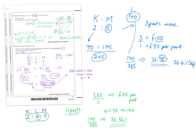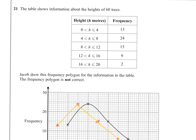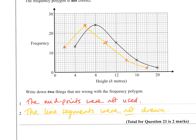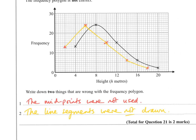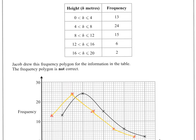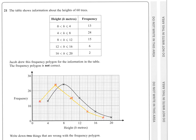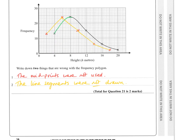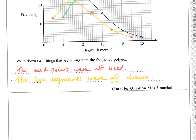Question 21. The table shows information about the heights of 60 trees, and Jacob drew a frequency polygon. We had to outline two things that were not correct. The midpoints were not used — between 0 and 4 we should have gone to 2 and up to 13, which was not done. Also, when using a frequency polygon, think of a polygon as having straight edges or line segments, but this one is clearly curved. So: midpoints were not used, and line segments were not drawn.